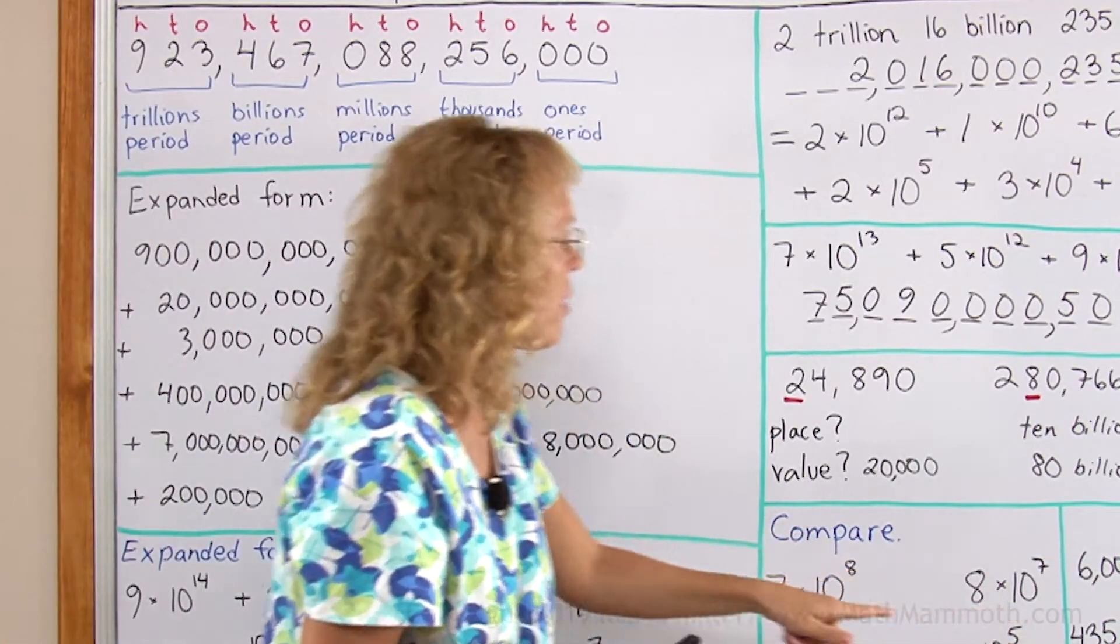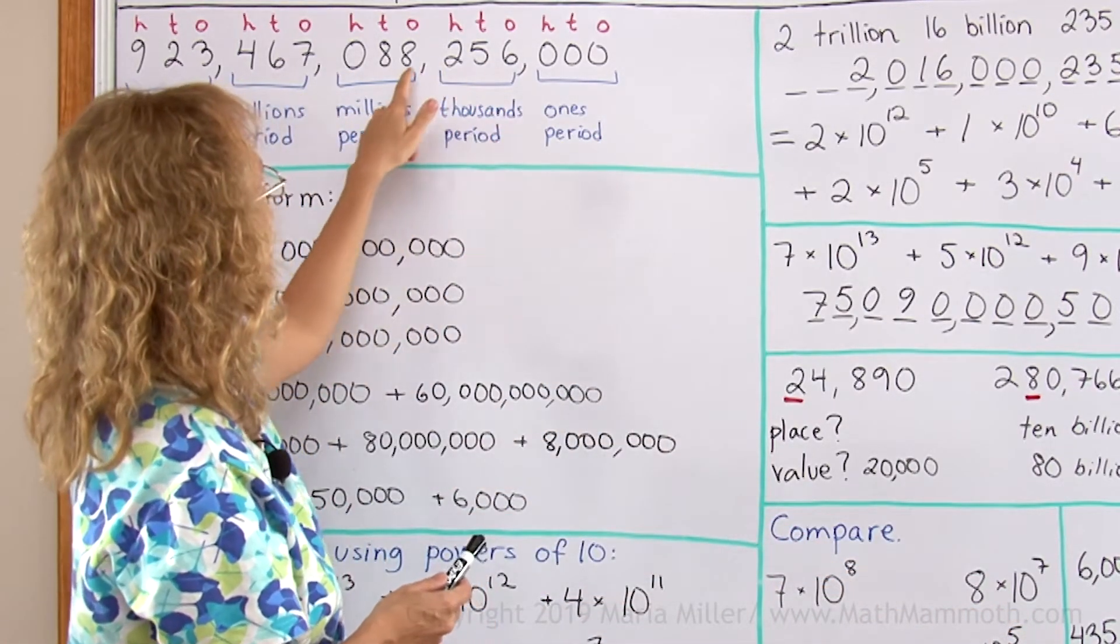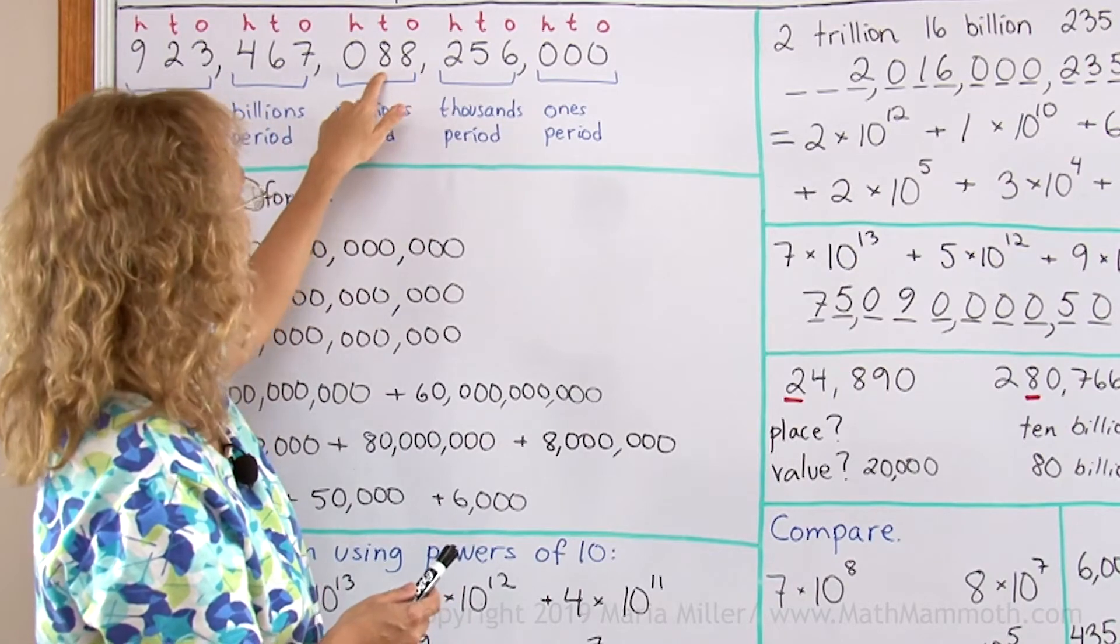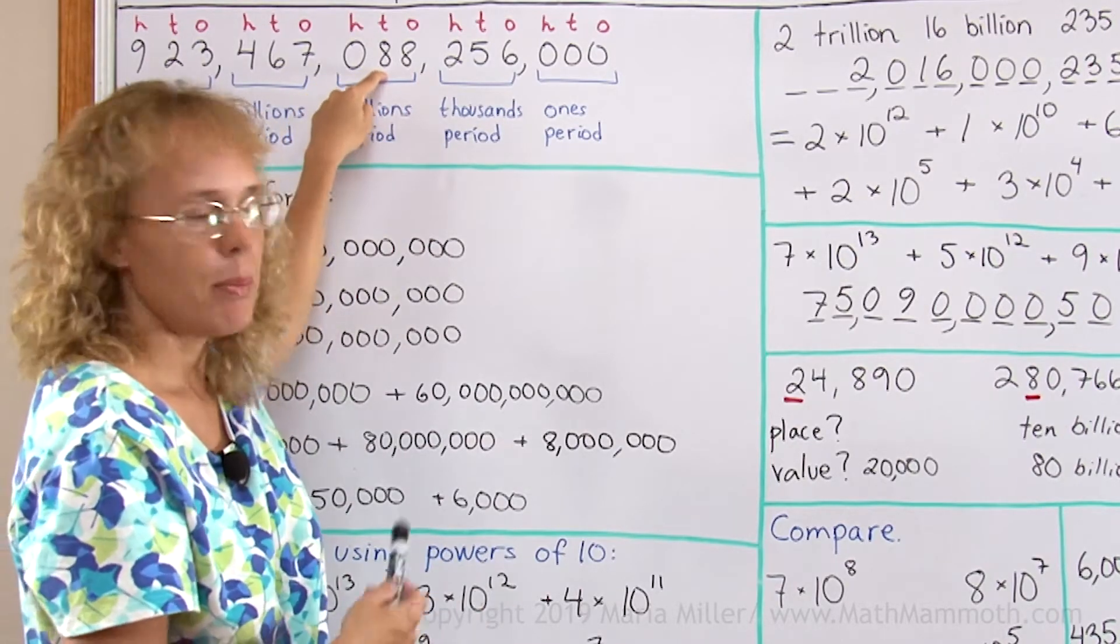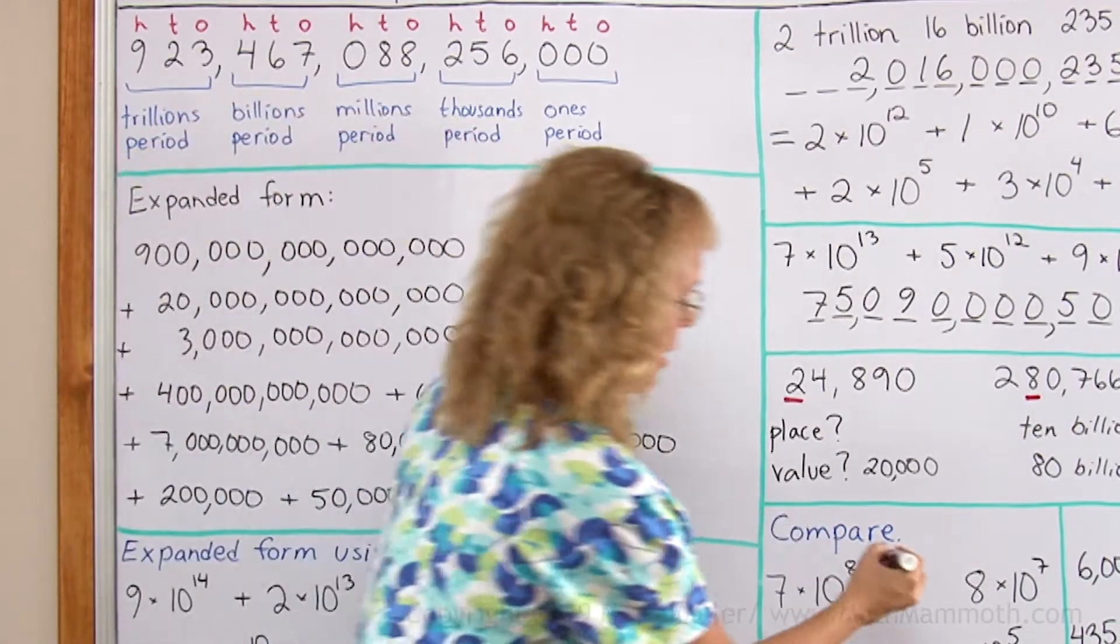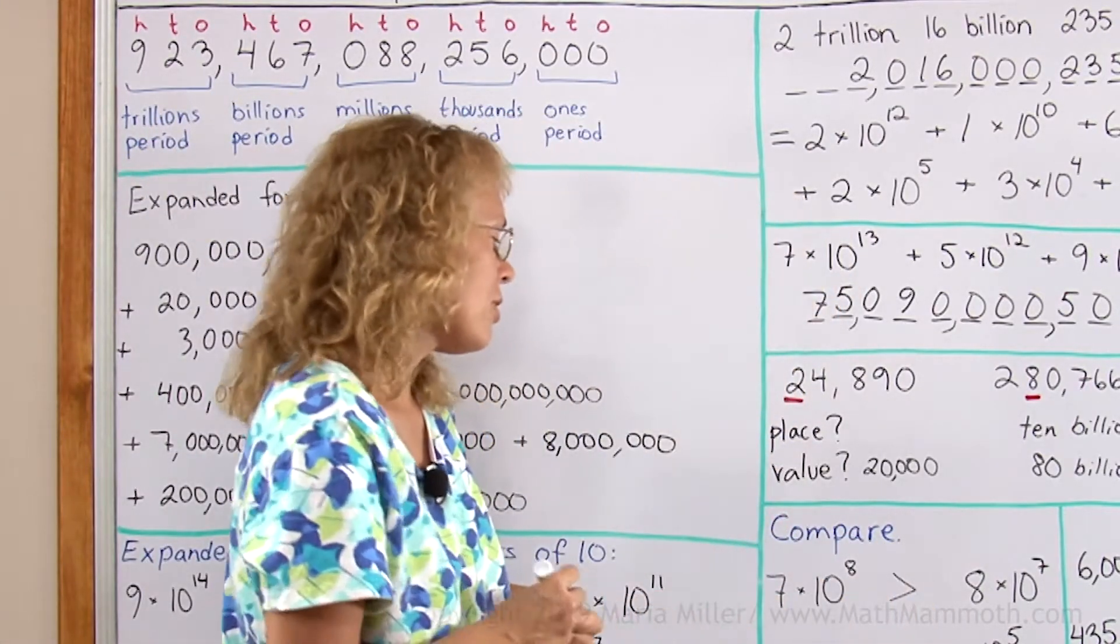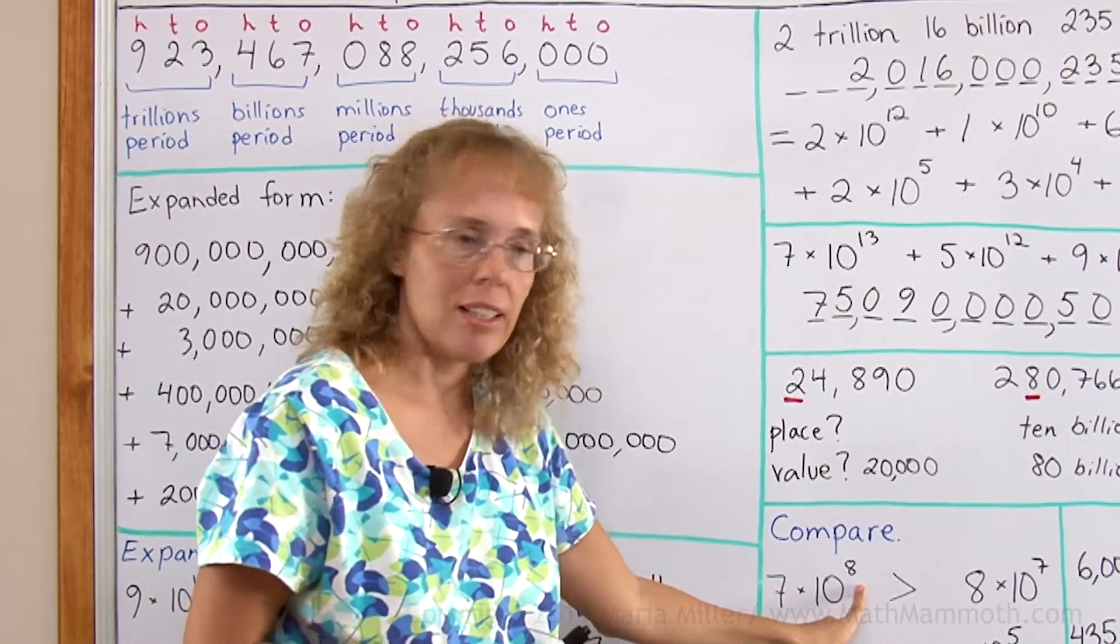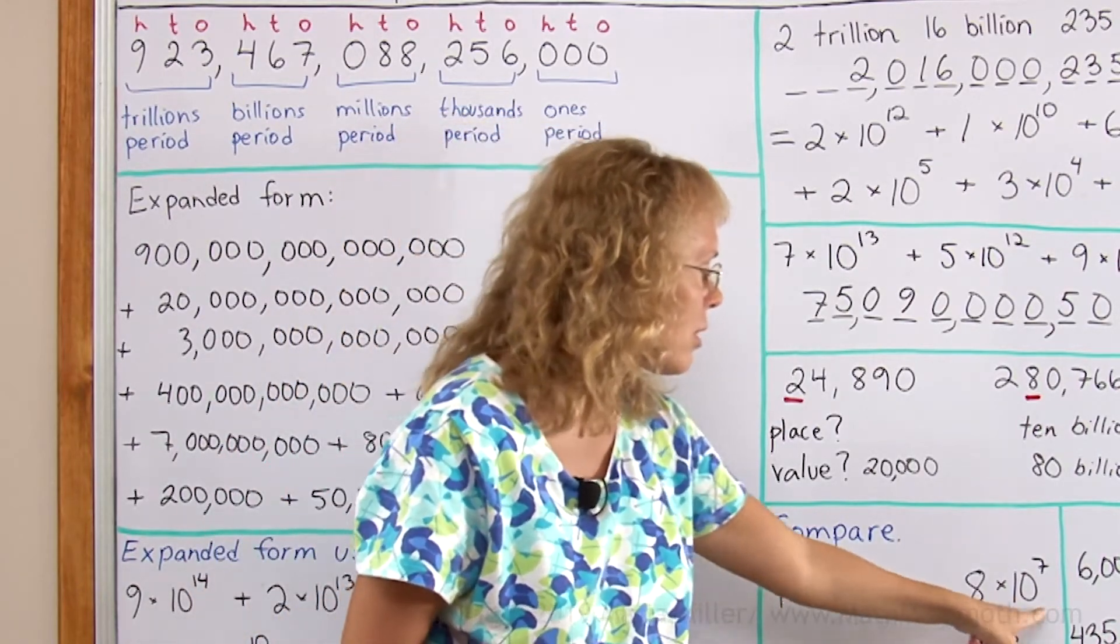Now 10 to the 7th would be 7 zeros, and then 8. This would be 80 million. 80 million or 700 million? This is more. And you can see, of course, you can see it just by looking at the power of 10. 10 to the 8th is more than 10 to the 7th.